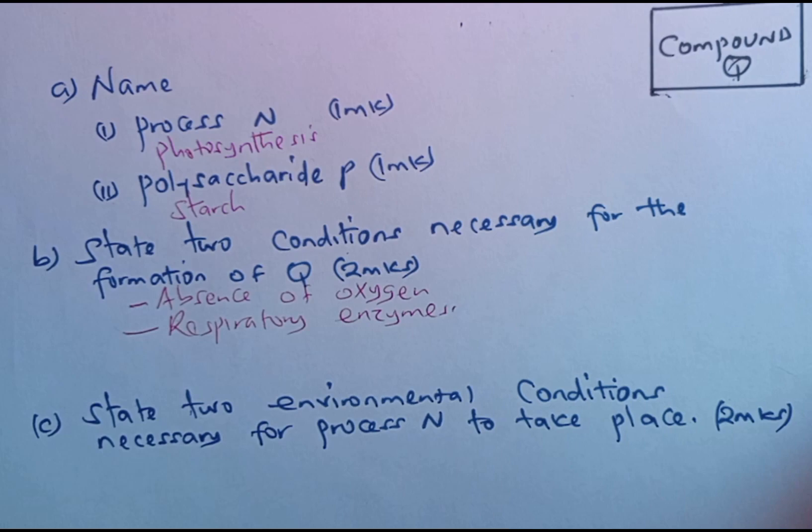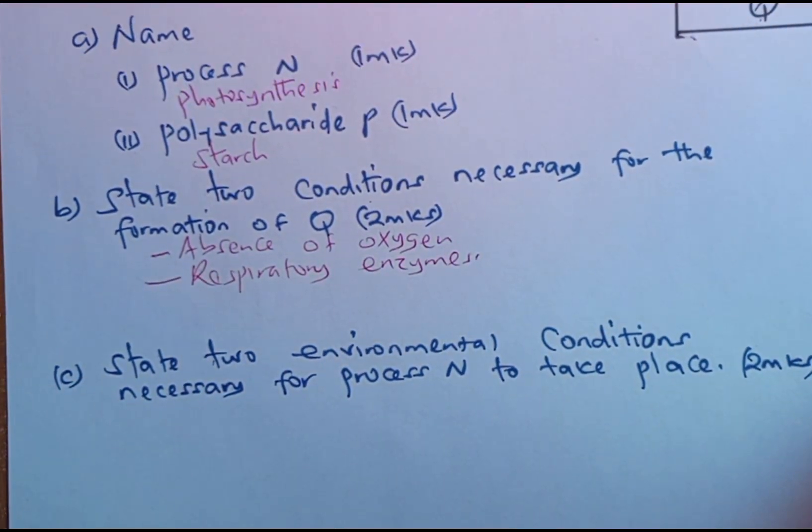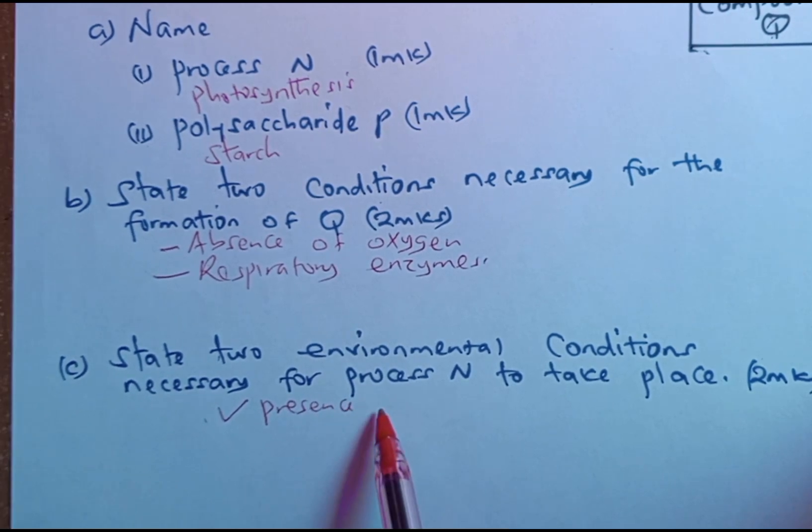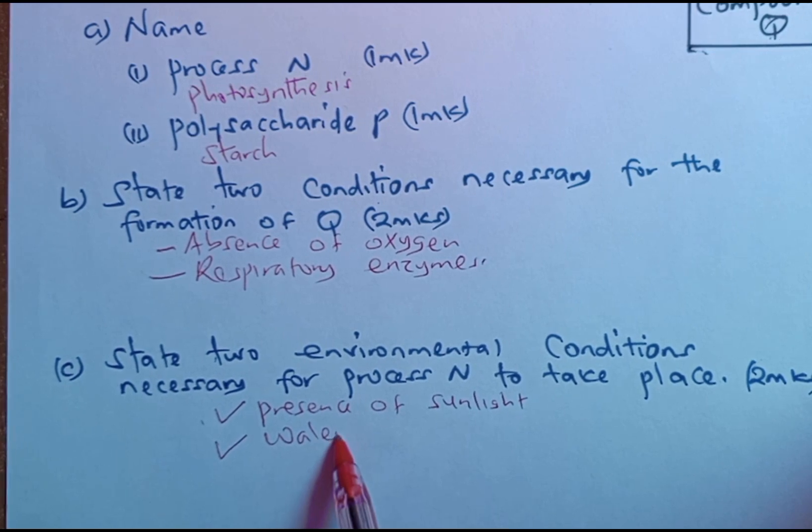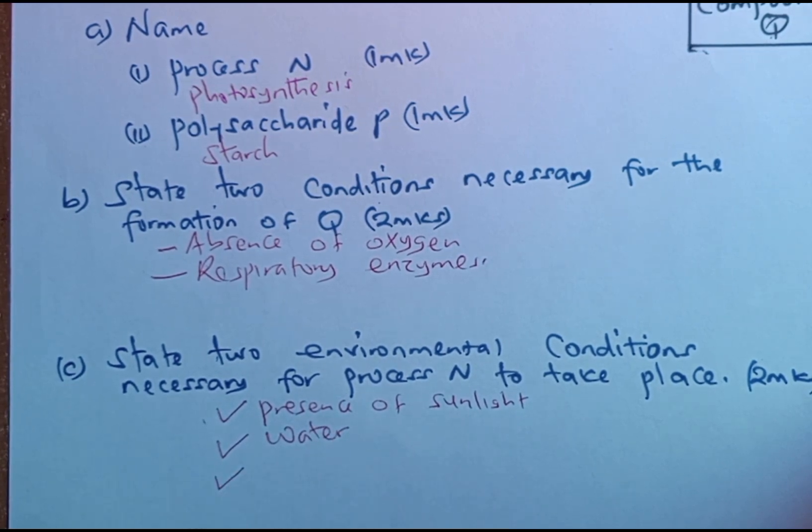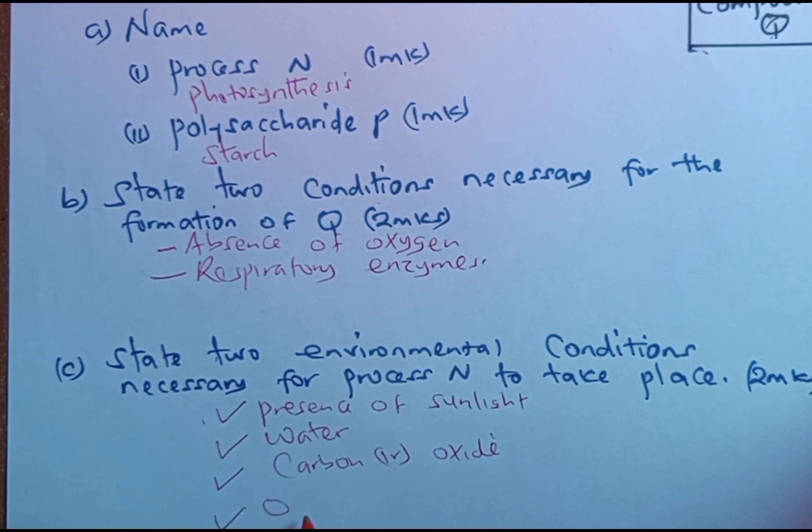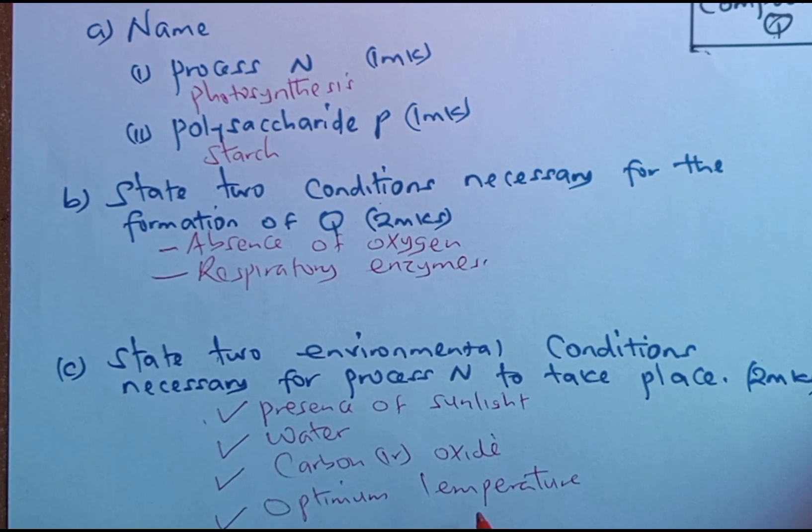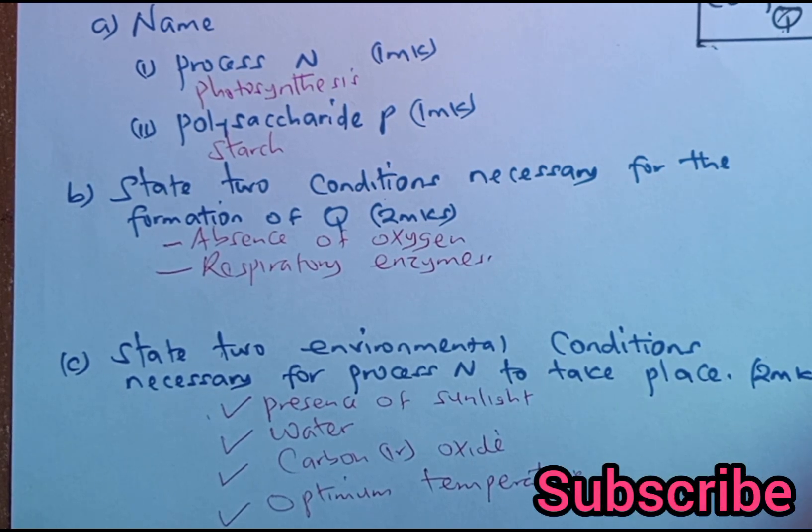Then we move to part C, state two environmental conditions necessary for process N to take place. We have already identified process N as photosynthesis. And for photosynthesis to take place: one, it has to take place in the presence of sunlight. It has to take place when there is water. Water is one of the environmental conditions necessary for this process. Then we have carbon dioxide is also required. We can also talk about optimum temperature. All these are conditions necessary for photosynthesis to take place.